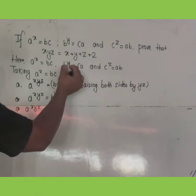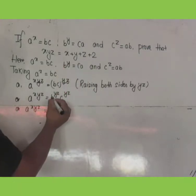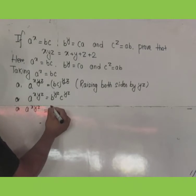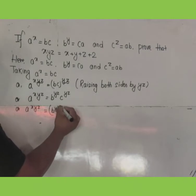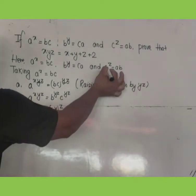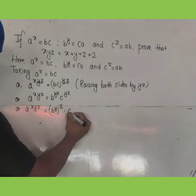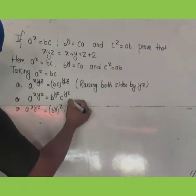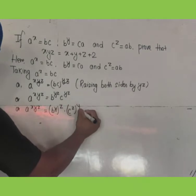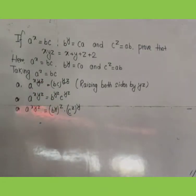We know that b^y = ca, so b^(yz) = (ca)^z = c^z · a^z. We also know that c^z = ab, so c^(yz) = (ab)^y = a^y · b^y. I arrange the terms so I can use them accordingly in the next step.